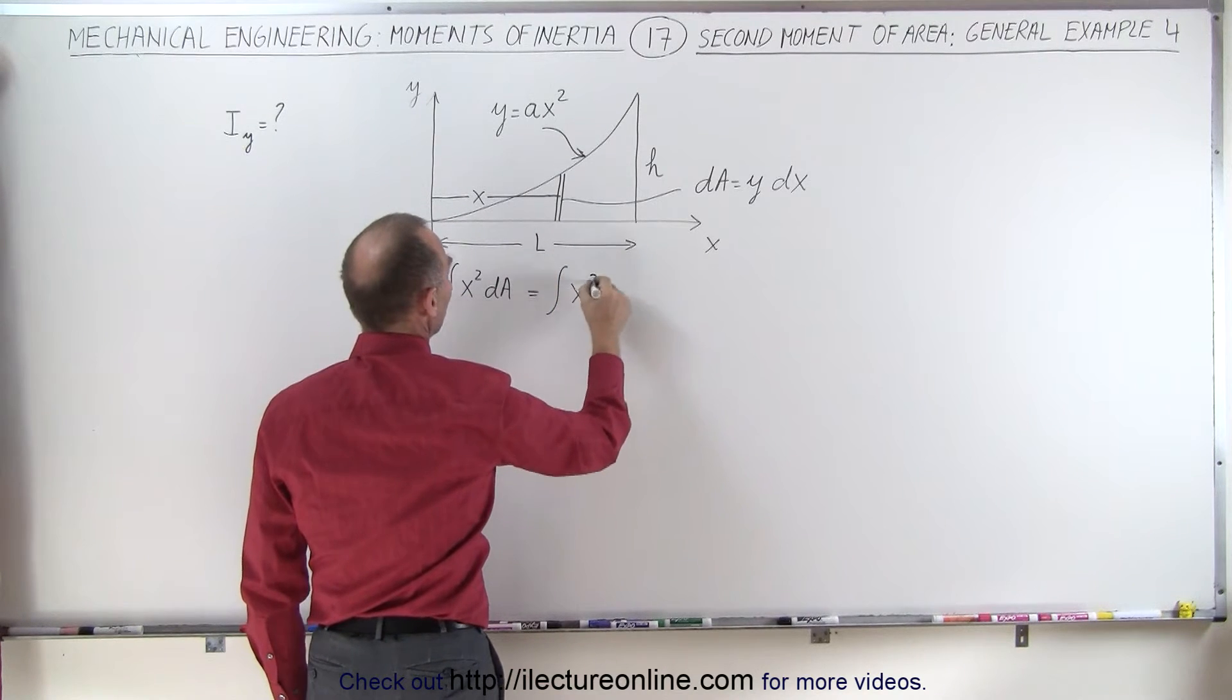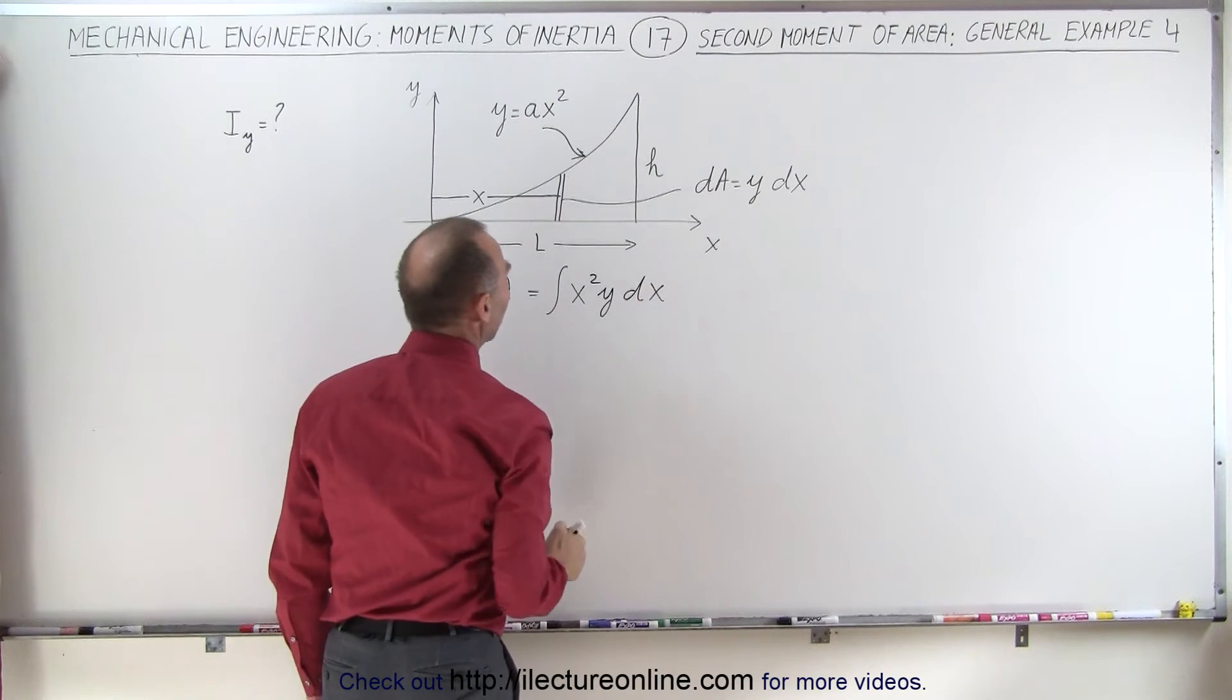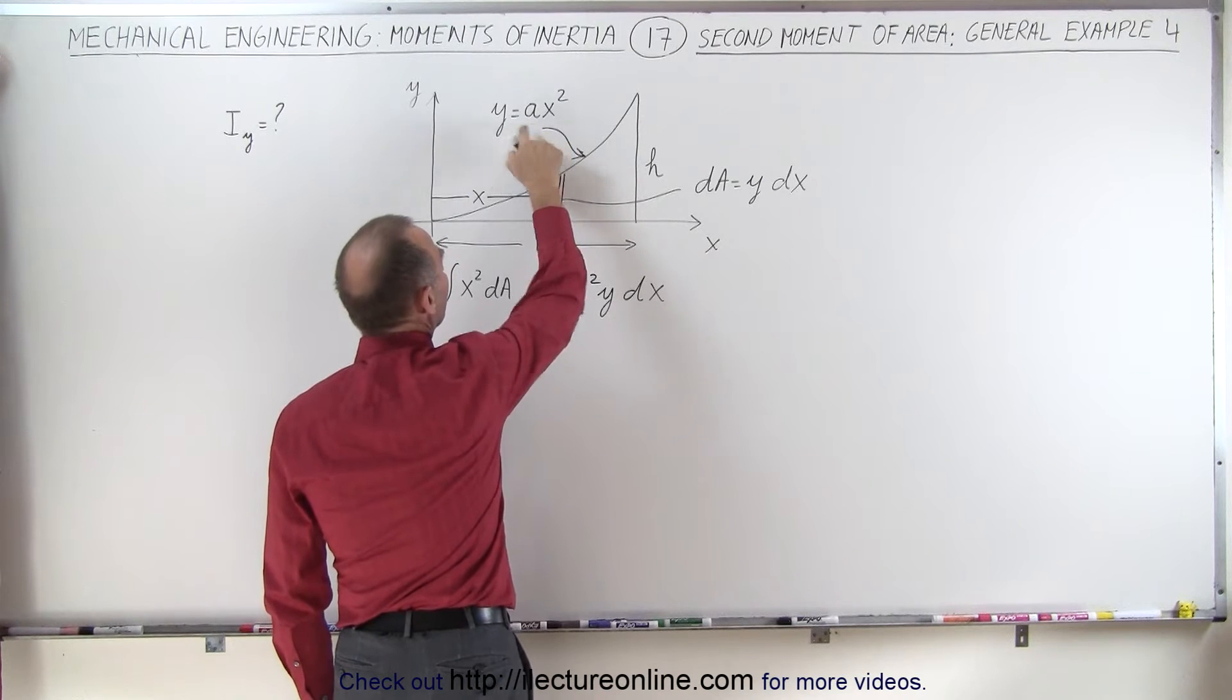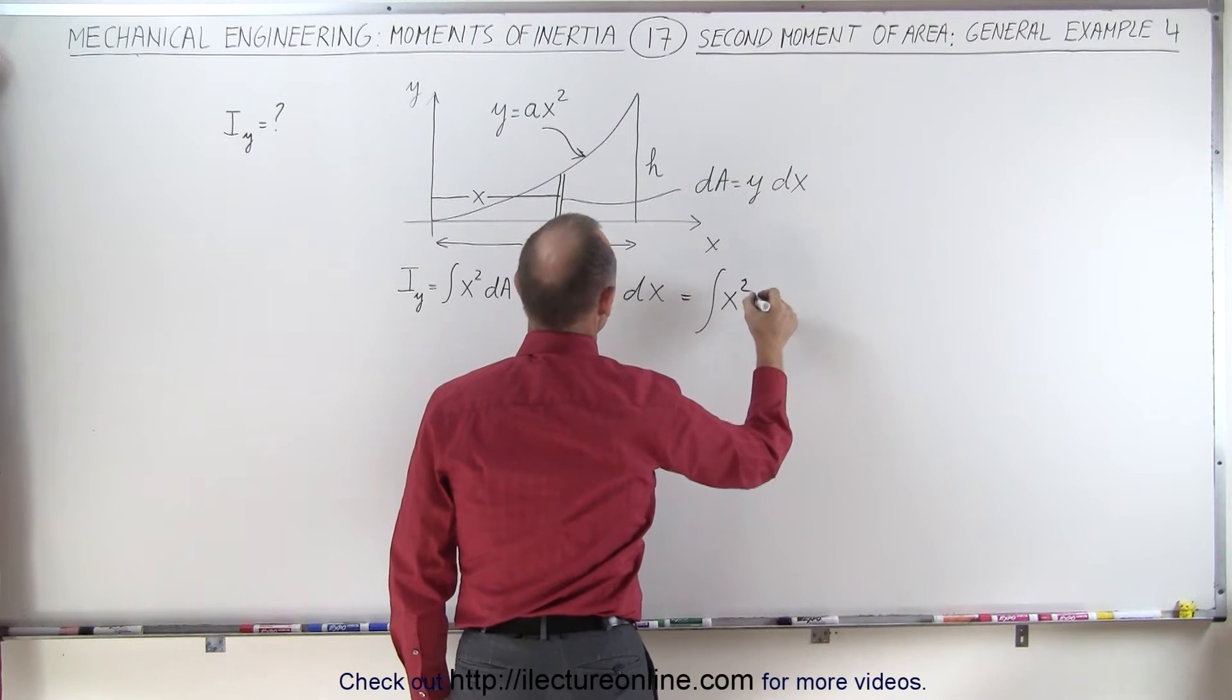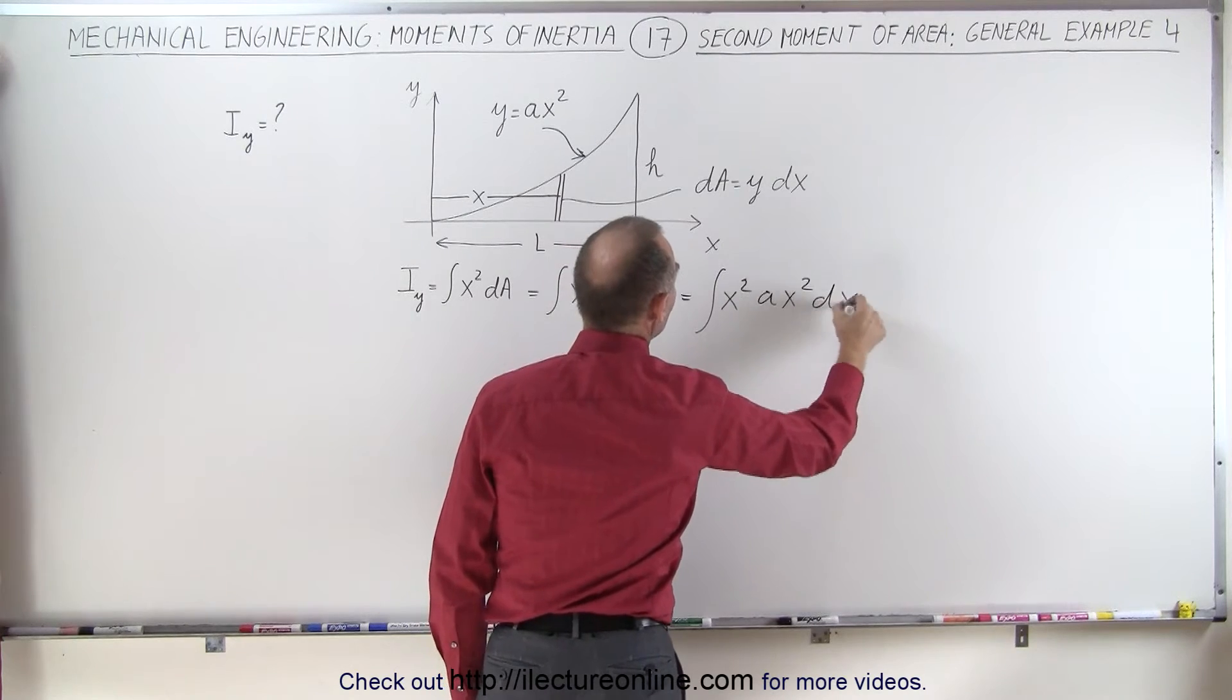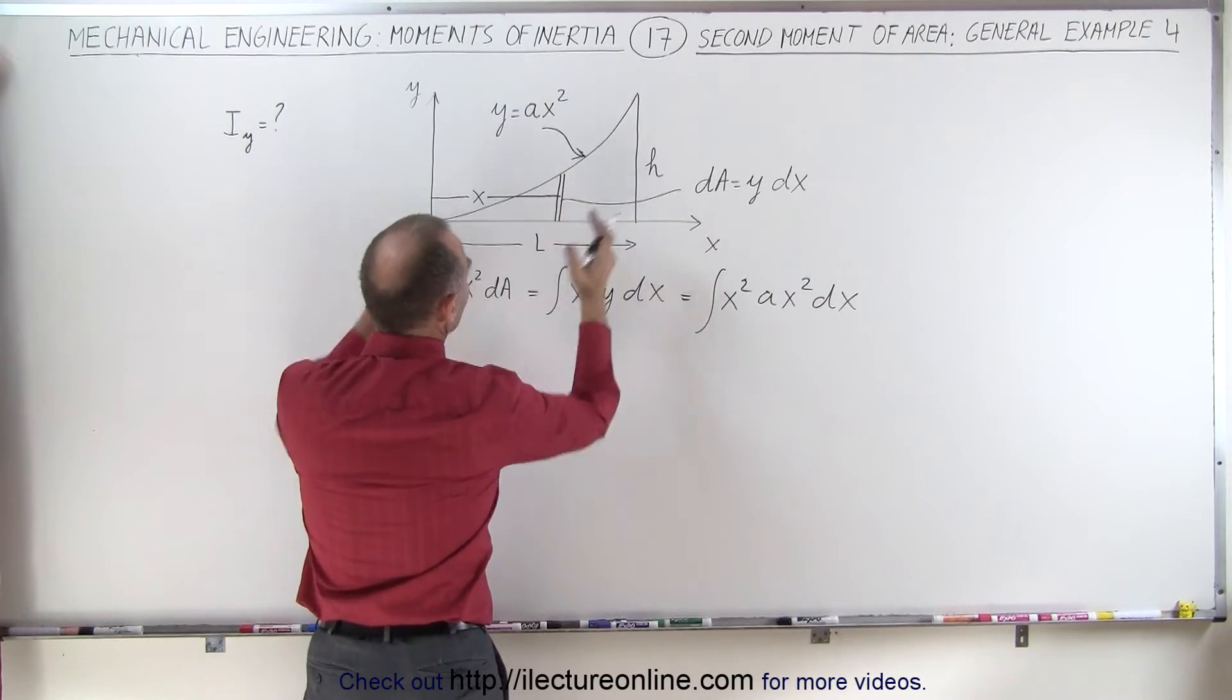So we get x squared times dA which is y times dx, and now we have to replace y with what it is equal to in terms of x. So that means that this is going to be equal to the integral from x squared times y which is ax squared times dx, and we're going to integrate from 0 to L, L being the length of this shape.